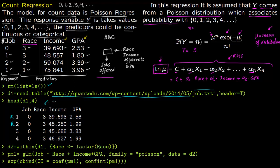Since race is categorical data — it takes only values 1, 2 and 3 — you have to factor it out. You make a new data set D2 from the original D1, and you say take race and make a factor out of it. So this becomes a categorical indicator. Now you build your Poisson regression model: PM1 is the name of the model, GLM is the generalized linear models function. You specify job as the response and race, income and GPA as predictors — exactly like linear regression — but now your family is Poisson, and your data is D2.